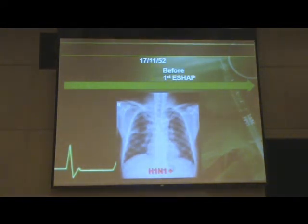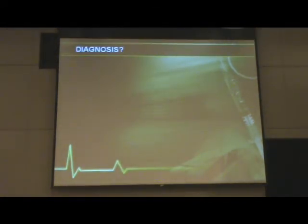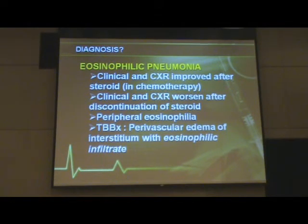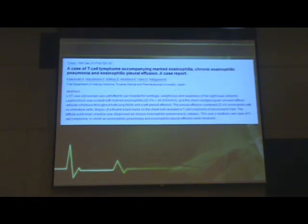So what's going on? I think putting everything together, this is eosinophilic pneumonia. His clinical and chest X-ray findings improved after the steroid-containing chemotherapy regimen, and it got worse again before the next cycle when the steroid effects were wearing off. He had persistent eosinophilia, and the transbronchial biopsies showed perivascular edema with eosinophilic infiltrates. Eosinophilic pneumonia in the setting of lymphoma is already rare — I could only find about 3 case reports on PubMed.